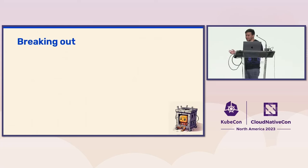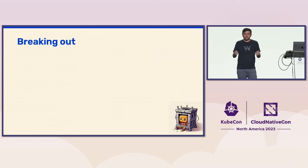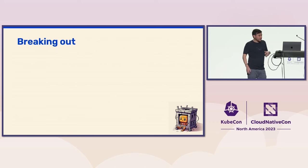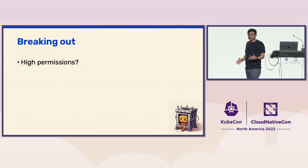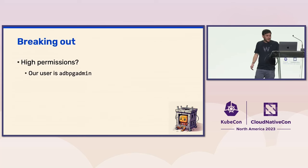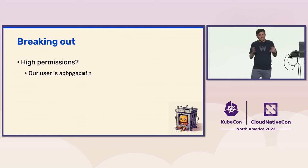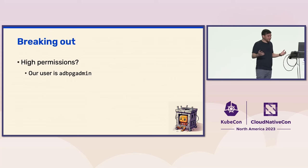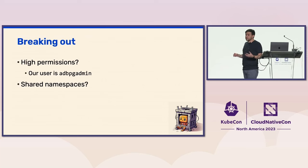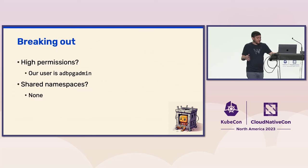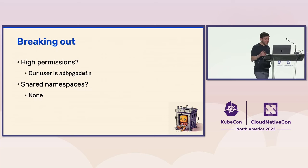Whenever we try to escape out of containers, we look for similar patterns of mistakes people usually make when configuring Docker containers. One thing we look for is high permissions within the container — what sort of permissions and Linux capabilities does our user have? In this case, we did not run as root. We ran as a user called adbpgadmin. It was quite frankly just a weak user with no access to anything interesting, no permissions or capabilities we could exploit. We also looked for shared namespaces — PID, mount, network — and found none of those either.